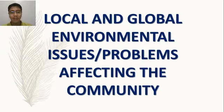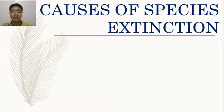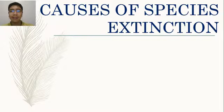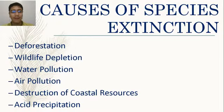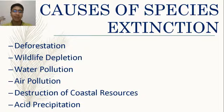Our objective today is to know the causes of species extinction. The main topics are: deforestation, wildlife depletion, water pollution, air pollution, destruction of coastal resources, and acid precipitation.